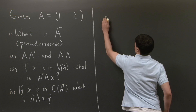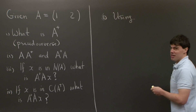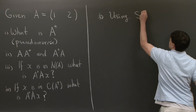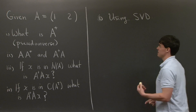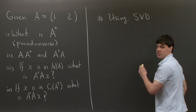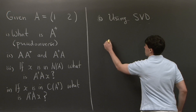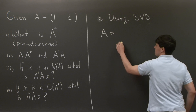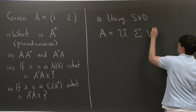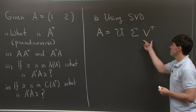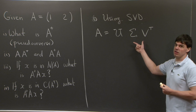We define the pseudo-inverse using the SVD. This is nothing new. We note that because A is not square, the regular inverse of A doesn't necessarily exist. However, the SVD exists for every matrix A, whether it's square or not. The SVD of a matrix has the form U sigma V transpose, where U and V are orthogonal matrices, and sigma is a matrix with positive values or zeroes along the diagonal.